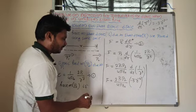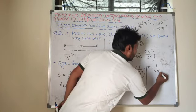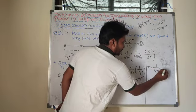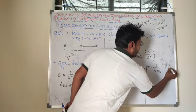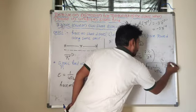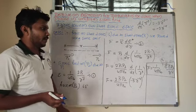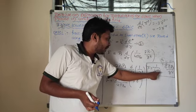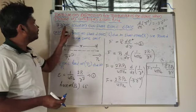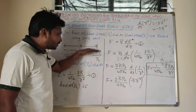Rearranging: F = −(1/4πε₀)(6P1·P2/R⁴). So the expression for force between two short electric dipoles when placed along the same axial line is F = −(1/4πε₀)(6P1P2/R⁴).